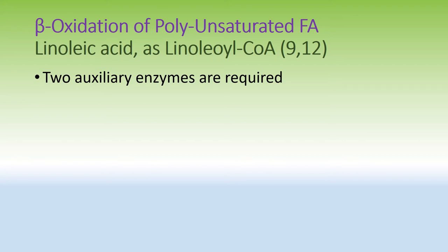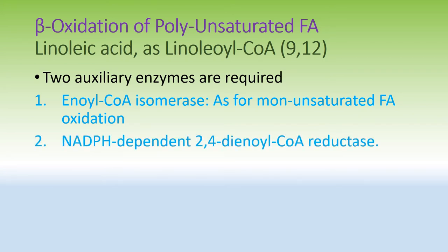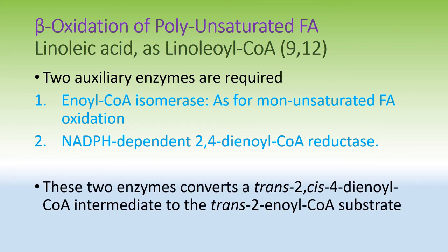The oxidation of this polyunsaturated fatty acid requires some additional auxiliary enzymes. For oleic acid, only one enzyme — isomerase — was required. For this polyunsaturated fatty acid, two auxiliary enzymes are required: first, enoyl-CoA isomerase (similar to oleic acid oxidation), and second, an NADPH-dependent 2,4-dienoyl-CoA reductase. These two enzymes convert a trans-2, cis-4-dienoyl-CoA intermediate to the trans-2-enoyl-CoA substrate necessary for oxidation.